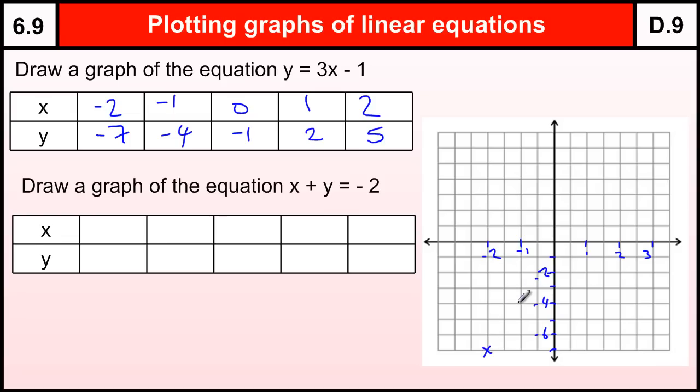Minus 1, minus 4 is going to be here. 0, minus 1 is going to be here. Then we're going to have 2 and 4 going up there. So 1, 2 is here, and 2, 5 is up there.